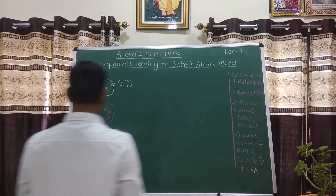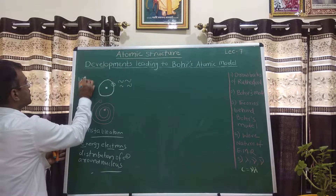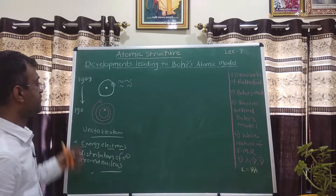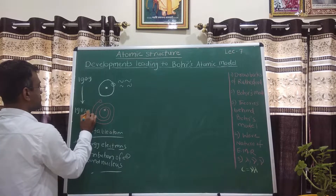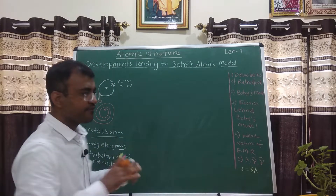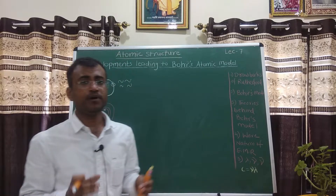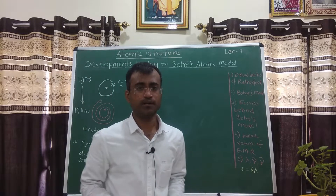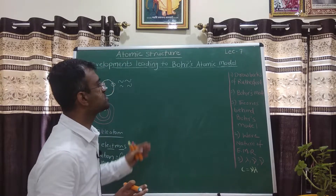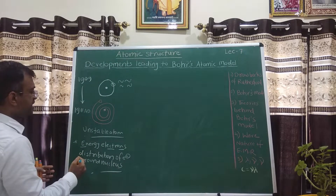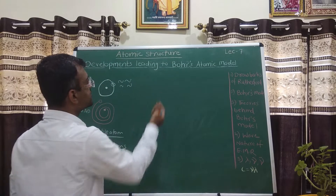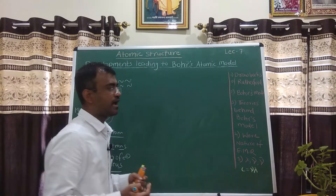Sir Rutherford started his experiment in 1909 and reached his model in 1911 AD. Up to this point, several theories and discoveries had happened in the scientific world. Sir Neil Bohr utilized these inventions and proposed his model, developing and amending Rutherford's model using these discoveries. We will move on to the discoveries later; first, we will have a glimpse of Sir Neil Bohr's atomic model.